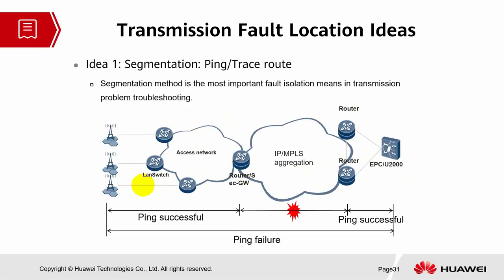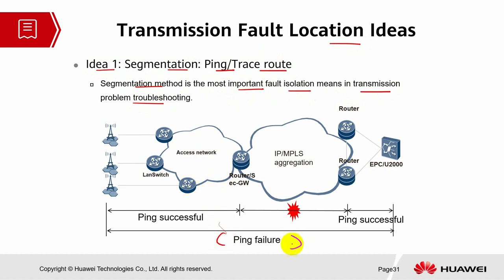The first transmission fault location idea is segmentation via ping and traceroute. The segmentation method is the most important fault isolation means in transmission problem troubleshooting. We must test the ping from a certain range of destination — local to destination — to see whether we can reach the other end, usually between local and peer.